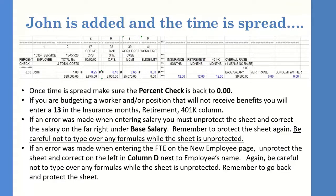If you accidentally enter the wrong base salary, you can unprotect the sheet and make corrections in the far-right base salary column. However, be very careful not to type over any formulas — this spreadsheet has many built-in formulas and overwriting them will cause incorrect calculations. As soon as corrections are made, re-protect the sheet. The same caution applies if you incorrectly entered an FTE in column D.